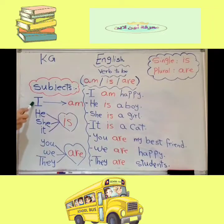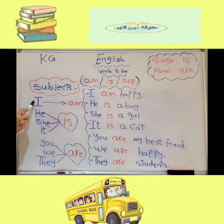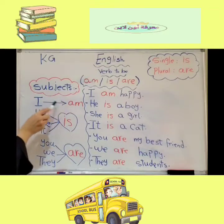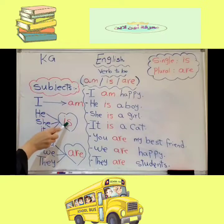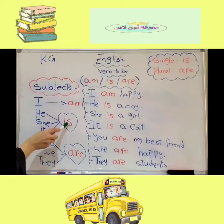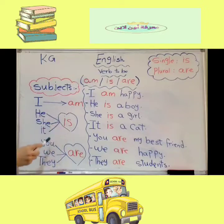I goes with am — I am. He goes with is — he is. She goes with is — she is. It goes with is — it is.